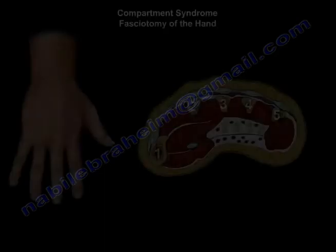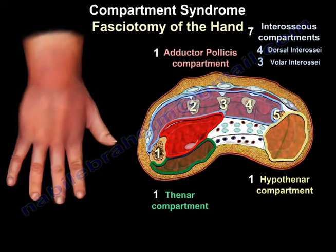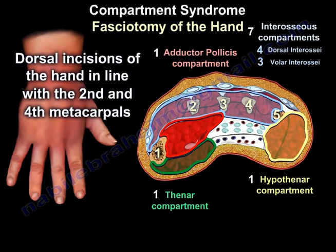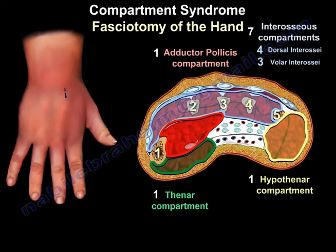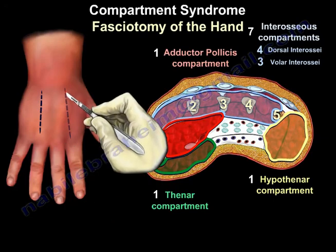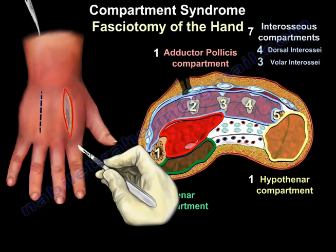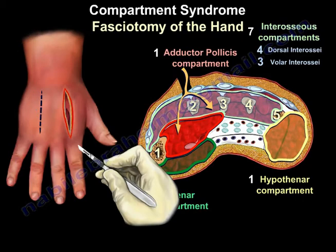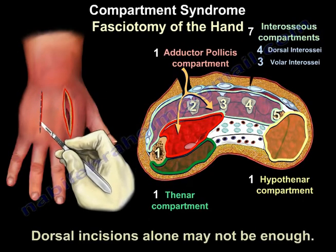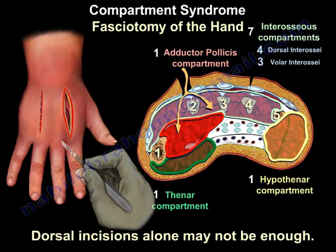Performing fasciotomy of the hand. Two dorsal incisions of the hand are done in line with the second and fourth metacarpals. Dorsal incisions alone may not be enough.